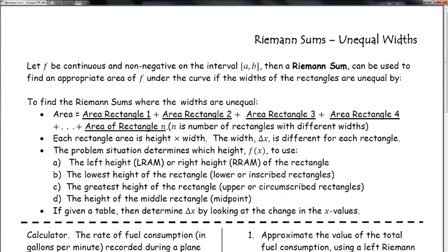You can probably take an average, which will be the middle height or midpoint. If you've been given a table, you're going to determine delta X by looking at the change in the X values.